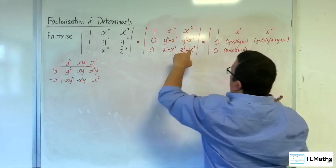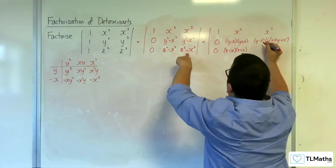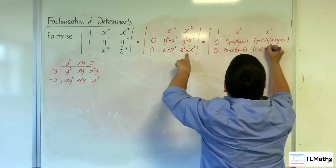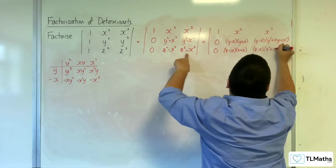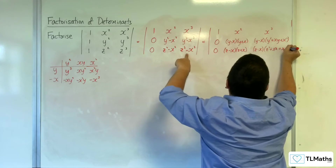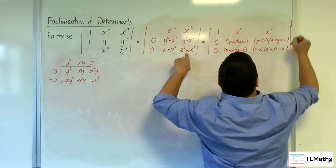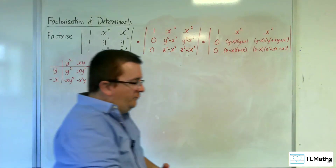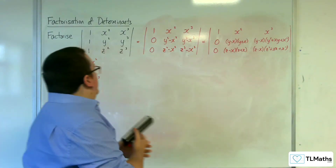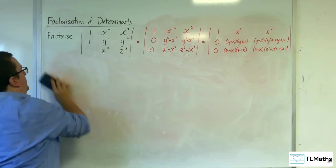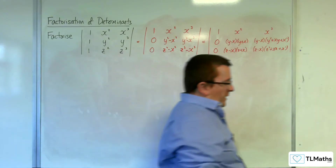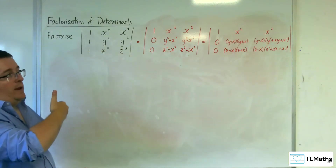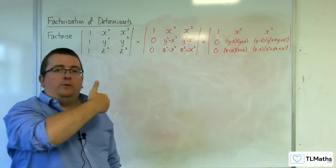It's a very similar thing for the z row — the y's have just been replaced with z's. So I have (z − x)(z² + xz + x²). Now I can factor (y − x) and (z − x) out of those two rows.